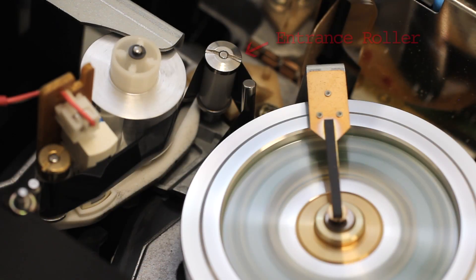The entrance roller is the component that actually pulls the tape into the transport during threading, but this guide also keeps the tape at a perfect height as it passes over the upper drum, allowing the tape to be aligned with the video heads.